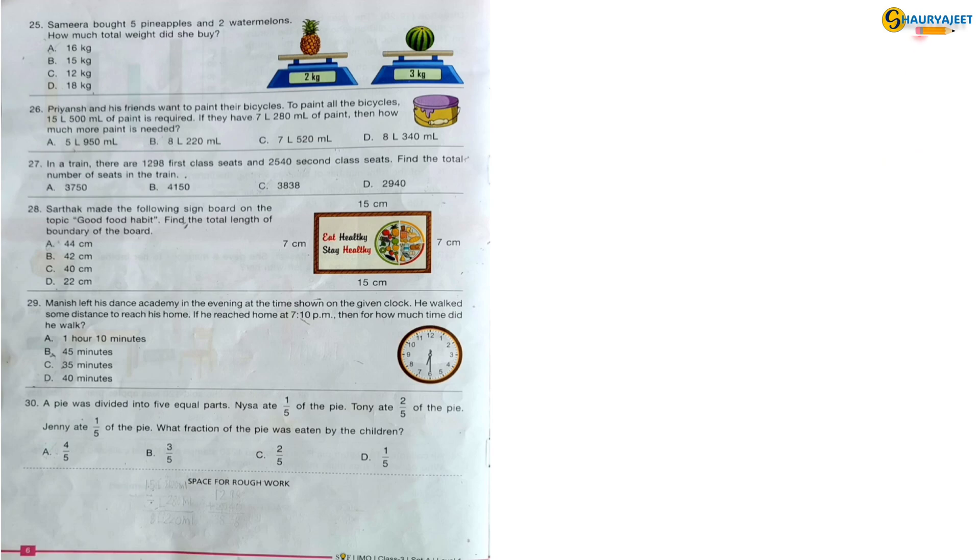Question 25: Samira bought 5 pineapples and 2 watermelons. How much total weight did she buy? Weight of 5 pineapples is equal to 10 kg, and weight of 2 watermelons is equal to 6 kg. So she bought total weight of 16 kg. So the correct option is option A, 16 kg.